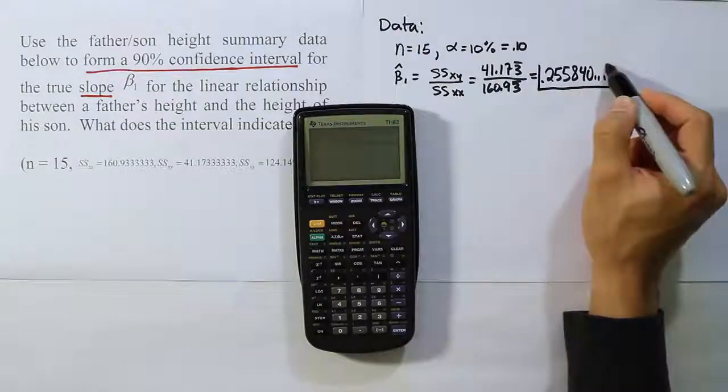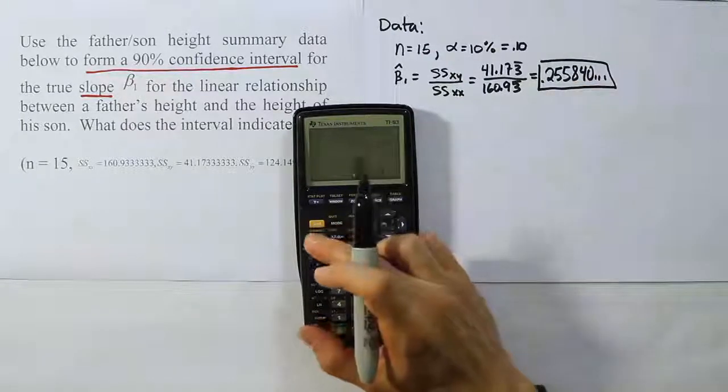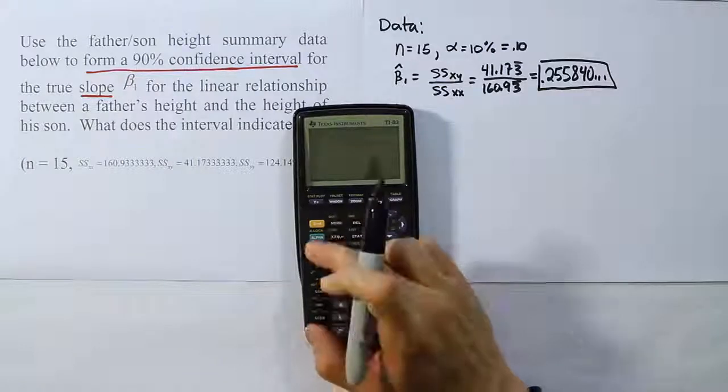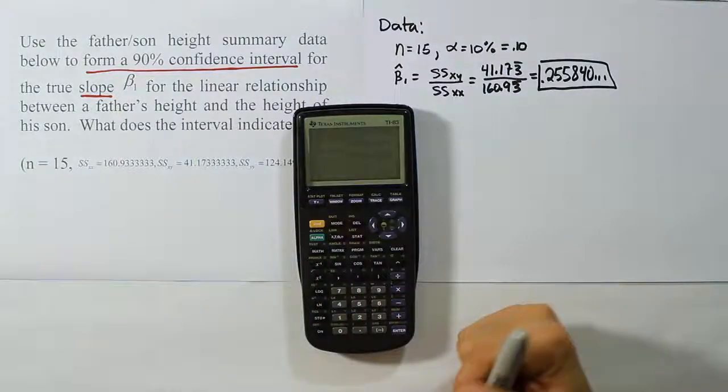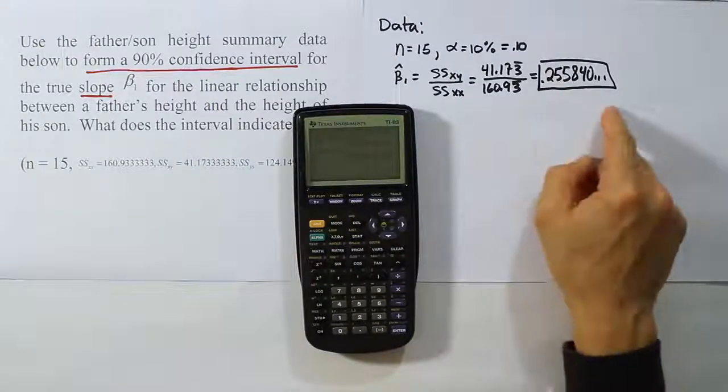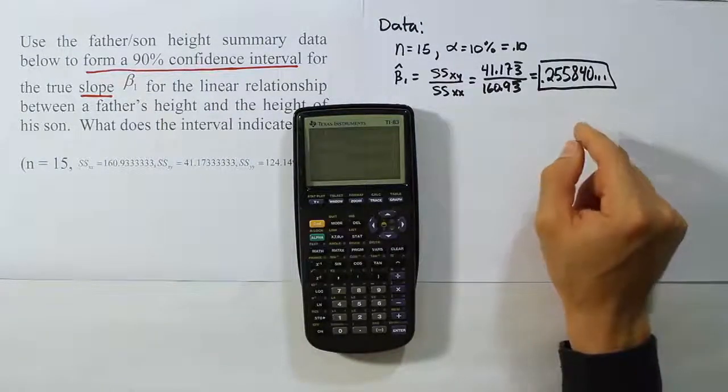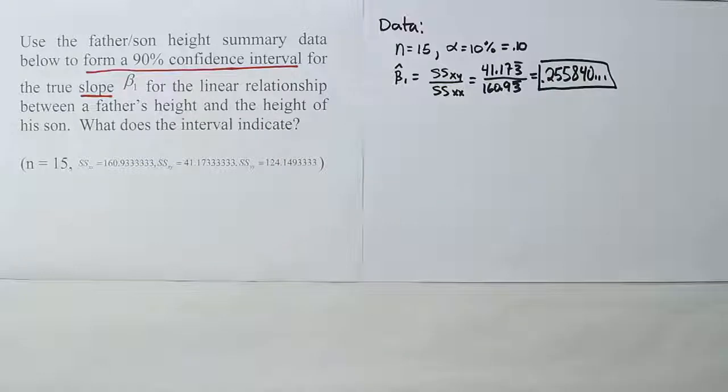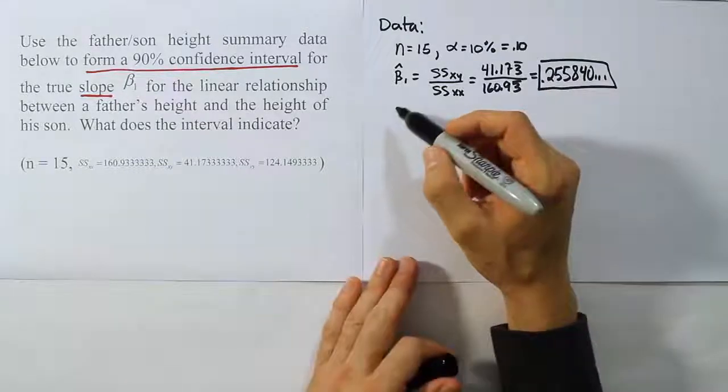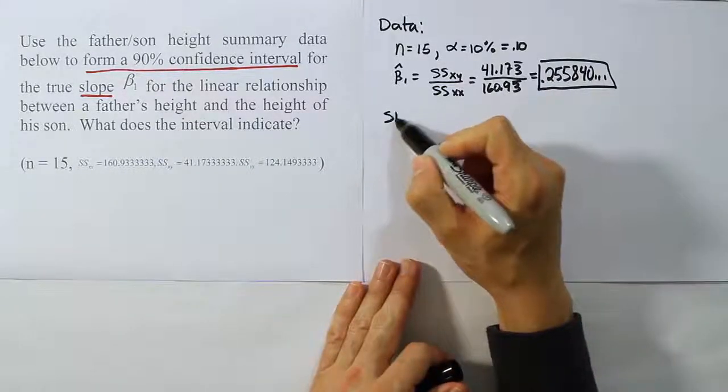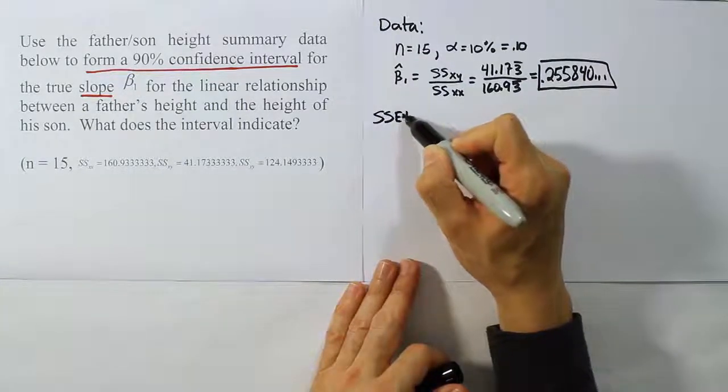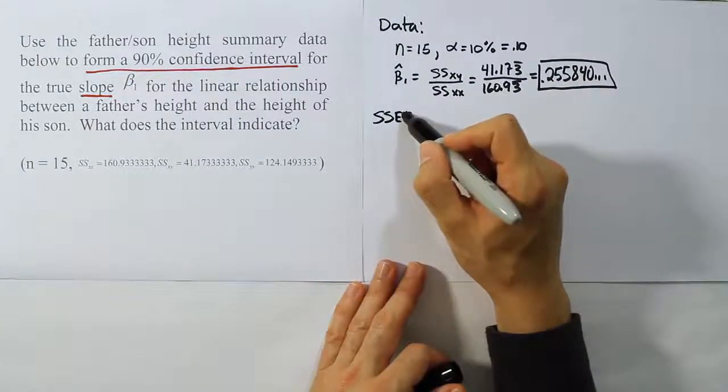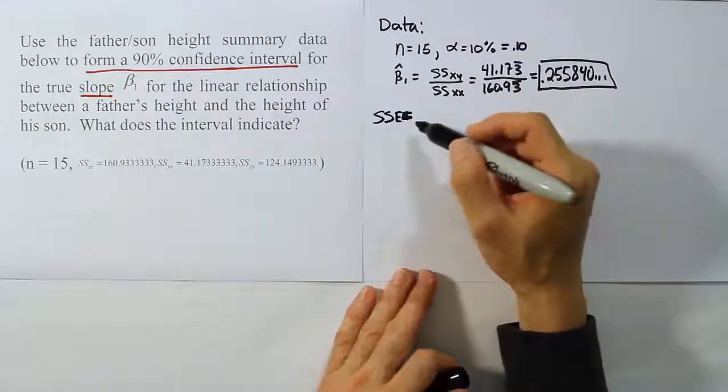So I'm going to save that value in my calculator. I'm going to store it under B, under alpha B in my calculator. If you don't have a store feature in your calculator, just write down enough decimal places that you don't have to round too much later on. So I have my beta 1. The next step of the process is to get the sum of squares for error, SSE. Let's get the sum of squares for error.